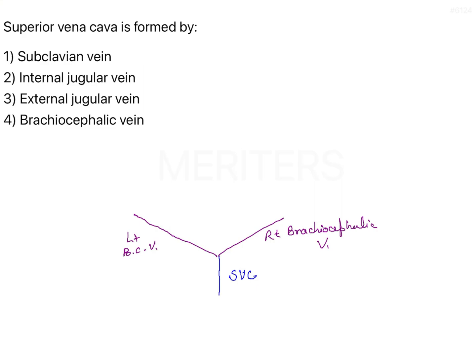The left brachiocephalic vein gives rise to the subclavian vein and the left internal jugular vein. On the left side, the two tributaries are the left subclavian vein and the left internal jugular vein. Similarly, on the right side, you have the right subclavian vein and the right internal jugular vein.